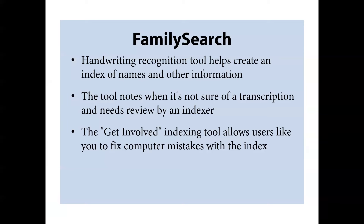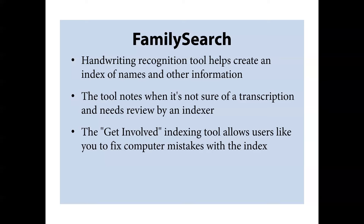Other tools are being leveraged by the big players including FamilySearch, which has been using a handwriting recognition tool — largely with Spanish records recently — and found it greatly expedites indexing compared to manual transcription. The tool knows when it's not sure of a particular transcription and flags those fields, often names, for human review. FamilySearch's tool called Get Involved allows you to see what the computer is flagging as a potential error and confirm or correct it.